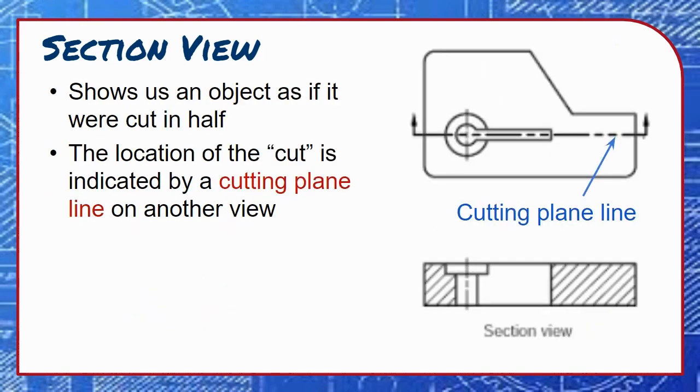A section view shows us an object as if it were cut in half. The location of the cut is indicated by a cutting plane line on another drawing view.